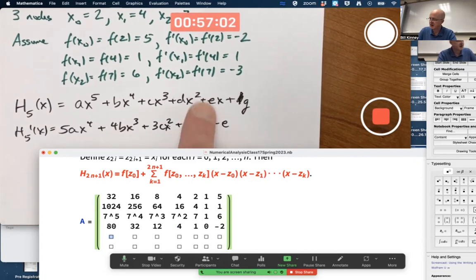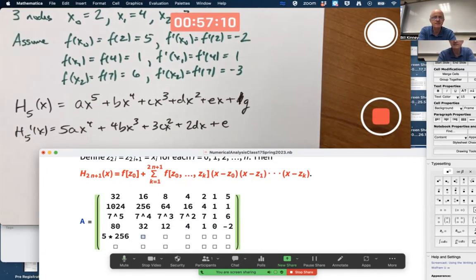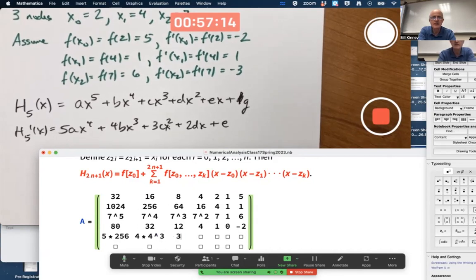Next one is when F prime of four equals one. Four to the fourth is 256 times five. I'll just do five times 256. And four times four cubed. Save time here.